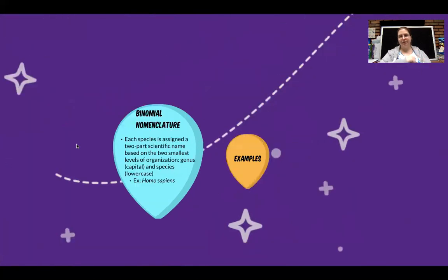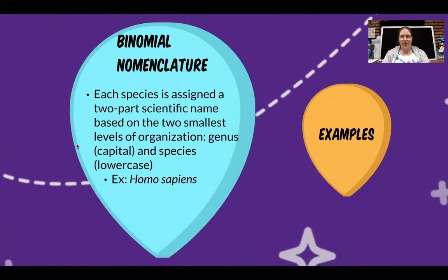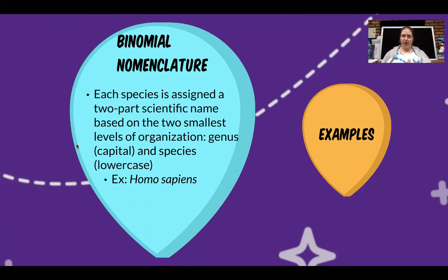Let's start by talking about binomial nomenclature first. Binomial nomenclature is the scientific name — it is a two-part name. That's what binomial means: two parts, two words. Nomenclature refers to the process of naming. So binomial nomenclature is where we use a two-part scientific name based on the two smallest levels of classification. We always use the genus and the species. The genus is written with a capital letter and the species as lowercase. Humans are in the genus Homo and the species sapiens, so our scientific name is Homo sapiens. When typed out, we do tend to italicize it.